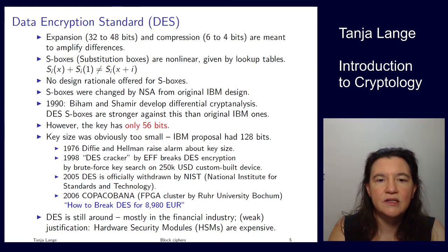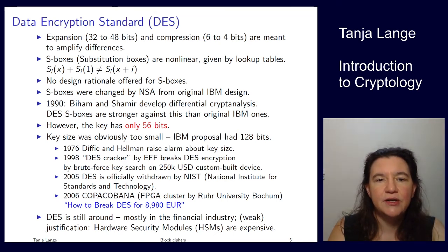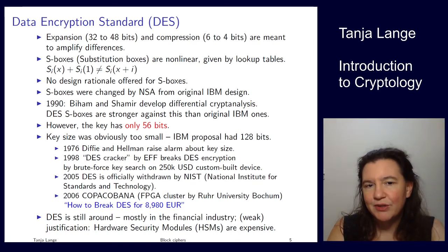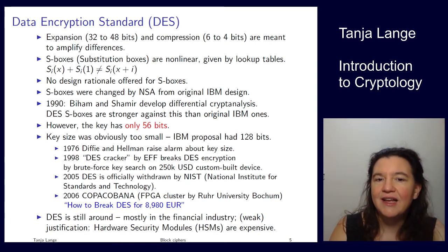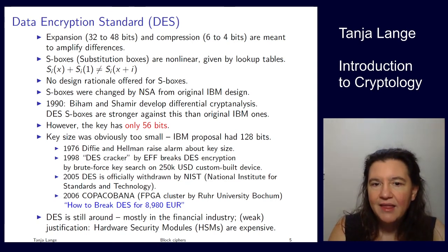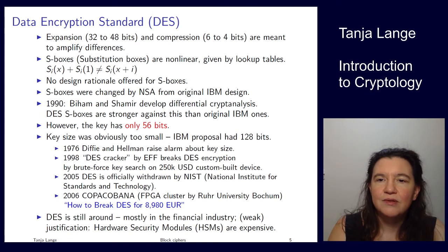Diffie and Hellman raised an alarm about the key size, saying it could be broken by brute force for a large but nation-state-feasible budget. Then about 20 years later, the Electronic Frontier Foundation (EFF) built a device for much less than Diffie and Hellman's estimate — because technology had advanced — specifically a customized design for $250,000 that actually managed to break DES. It took another seven years to have DES officially withdrawn, but it did speed up the transition.